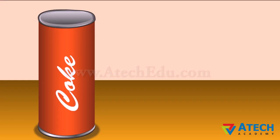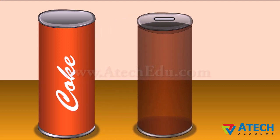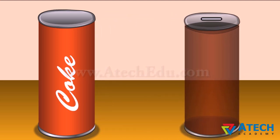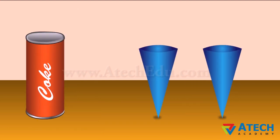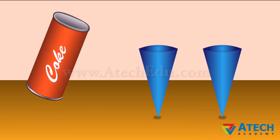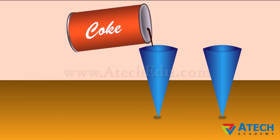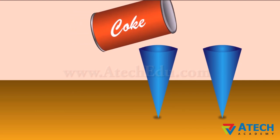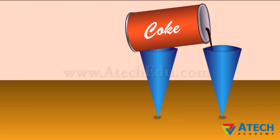Let us consider a can of soft drink of capacity 200 milliliters. The liquid inside the can takes the shape of the container, so the shape of the liquid in this case is cylindrical. Now this soft drink is poured into two cones of 100 milliliters each. The new container is a cone, hence the shape of the liquid in this case is conical. The change of shape of liquid is called the transformation of figures.